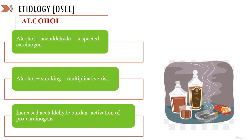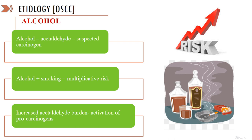Alcohol produces acetaldehyde on consumption, which is known to be a suspected carcinogen. The habit of alcohol consumption combined with smoking produces a multiplicative risk to the development of cancer — this has been referred to as the synergistic effect of tobacco and alcohol consumption. Alcohol consumption increases the acetaldehyde burden, resulting in the activation of pro-carcinogens. Additionally, alcohol consumption increases the diffusibility of the mucosal surface, resulting in increased susceptibility of the carcinogens formed by tobacco smoking to the oral epithelial cells.